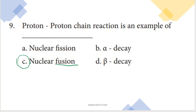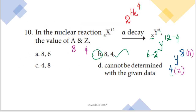Next: proton-proton chain reaction is an example of nuclear fusion. Option C is the right answer. Next: in the nuclear reaction 6X12 undergoes alpha decay to give a daughter element — find the values of A and Z. Alpha decay is 2He4, so atomic number Z = 6 minus 2 = 4, and mass number A = 12 minus 4 = 8. So A is 8, Z is 4; option B (8, 4) is the right answer.